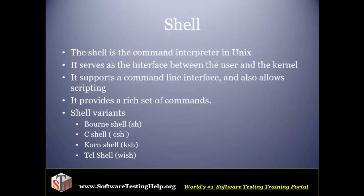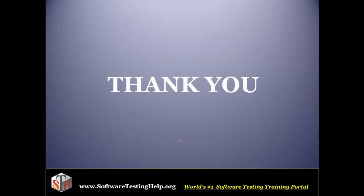Now talking about the shell — shell is a command interpreter. We interact with Unix through the shell. Whatever commands and programs we want executed, we pass them to Unix through the shell. The shell interprets those commands and passes them to the kernel, which then decides how the processing has to be done. It provides a rich set of commands and we have different shells available: Bourne shell, C shell, Korn shell, and DCL shell, each supporting different features. We will be seeing more commands and shell scripting in the later sessions. Thank you so much.